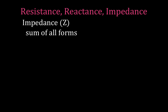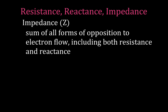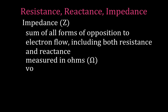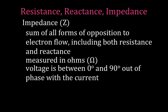Impedance. What is impedance? Impedance is simply the sum of all forms of opposition to electron flow, and that includes both the resistance and the reactance. It's also measured in ohms. If we have RC or RL circuits, the voltage is going to be out of phase with the current somewhere between 0 and 90 degrees. If you have a pure capacitive or a pure inductive circuit, then it will be exactly 90 degrees. When you combine inductors and resistors, or capacitors and resistors, it's going to be somewhere between 0 and 90 degrees.